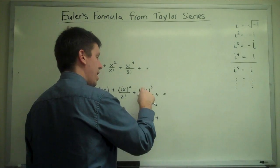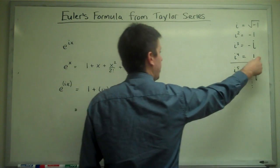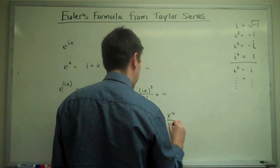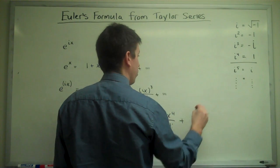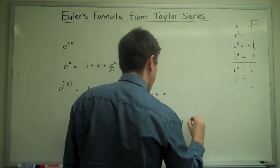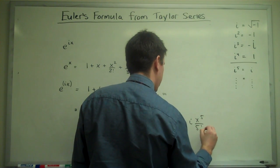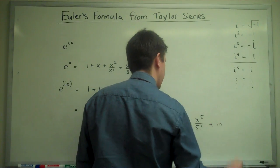The next term, i x all to the fourth, would be simply x to the fourth over 4 factorial. The next term would be i to the fifth x to the fifth, which would be i x to the fifth over 5 factorial, and so on.